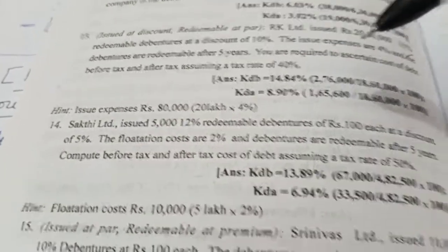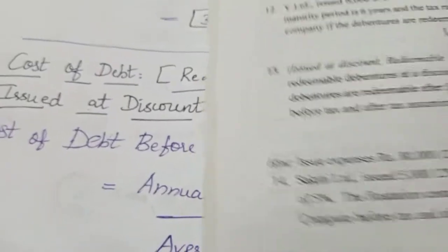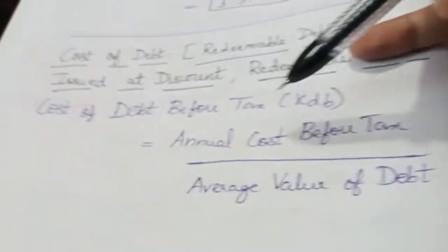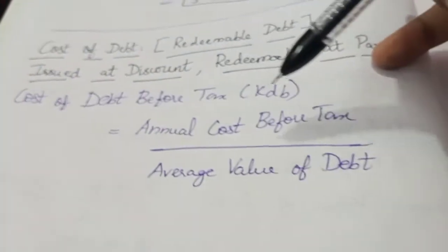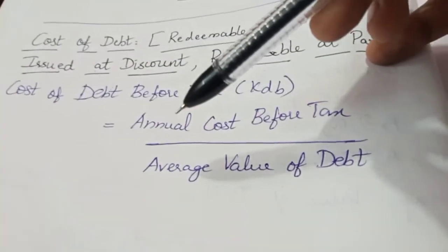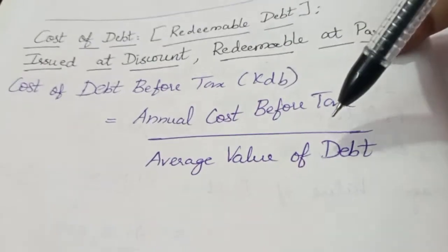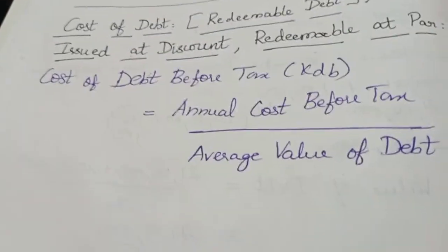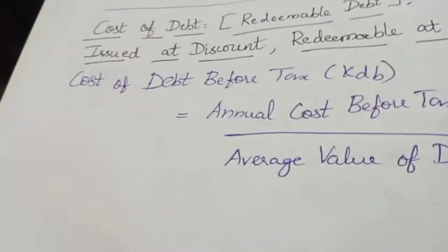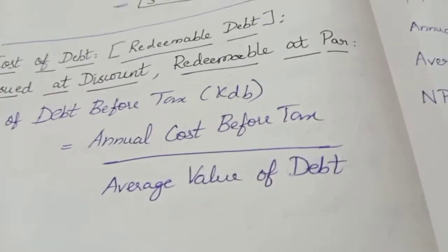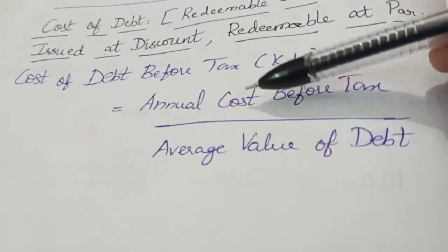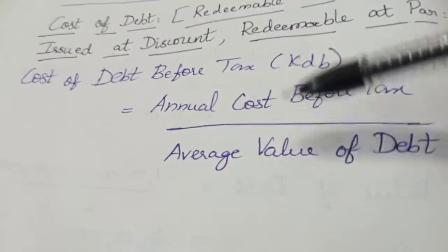We will use the formula: cost of debt before tax equals annual cost before tax divided by average value of debt. We will calculate annual cost in the numerator.